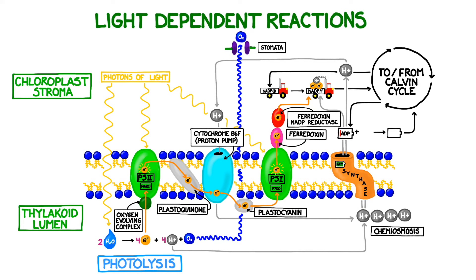This recharges ADP into a high energy ATP by reconnecting a molecule of inorganic phosphate to it. We call the recharging of ATP phosphorylation. The charged ATP is now in the stroma and ready to be sent on to the Calvin cycle along with the NADPH.